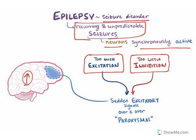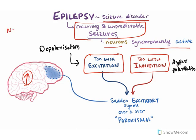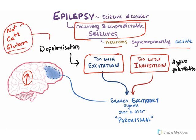Whenever neurons undergo depolarization, that is known as excitation. When neurons undergo hyperpolarization, it is called inhibition. There are channels and neurotransmitters which cause these two things. Sodium entry into the cell causes depolarization. Calcium entry into the brain causes depolarization. Neurotransmitters like glutamate and aspartate will also cause depolarization. Hyperactivity of all these three causes continuous depolarization — that is what is known as too much excitation.